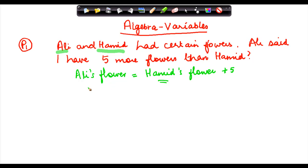Now in this case, suppose Hamid had ten flowers. Then how many flowers would Ali have? Ali would have ten plus five. If Hamid had fifteen flowers, then Ali would have fifteen plus five equals twenty.